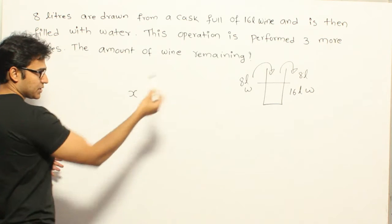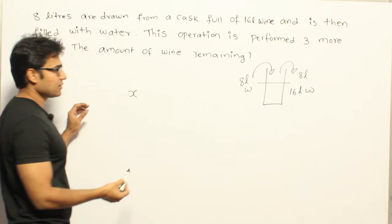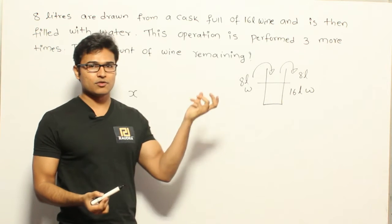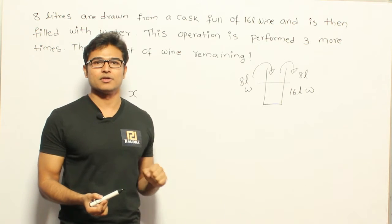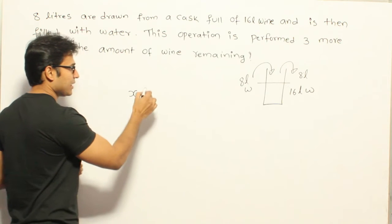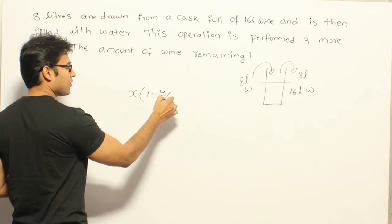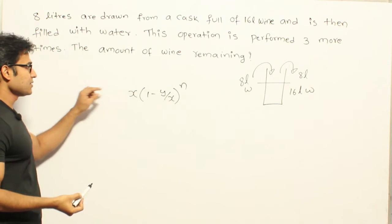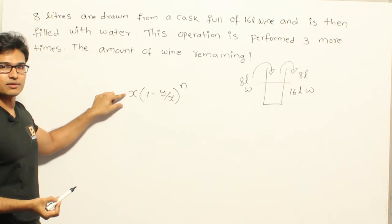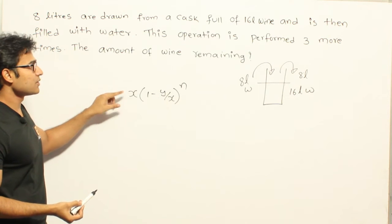If you are going to perform such kind of replacements n times, then the final amount of the pure wine remaining or whatever the initial pure liquid is, is x into (1 minus y by x) whole power n. This is what we got. In this case, x is the initial amount of pure wine. So what is x given, it is given as 16 liters. Therefore x is 16.